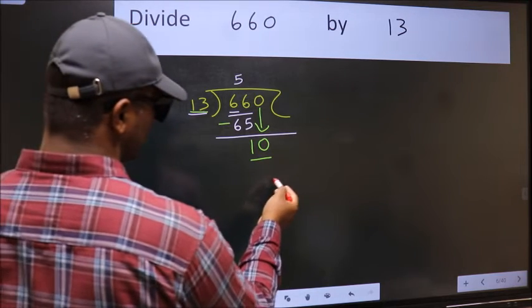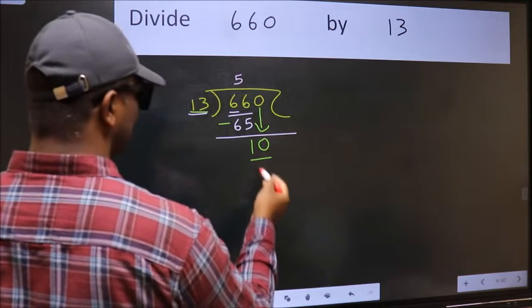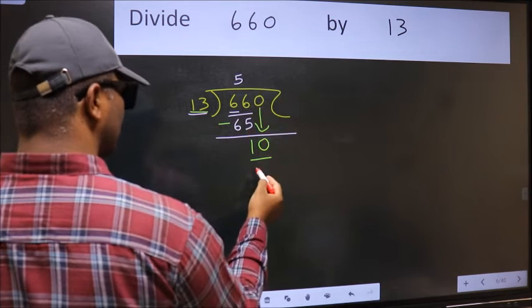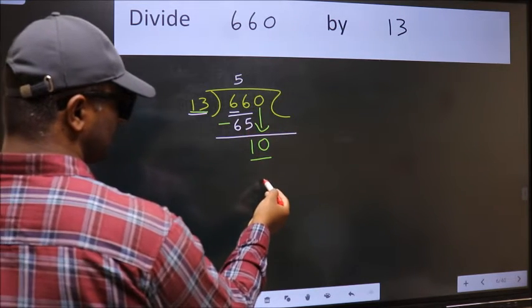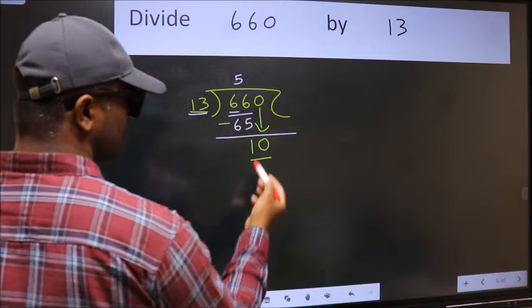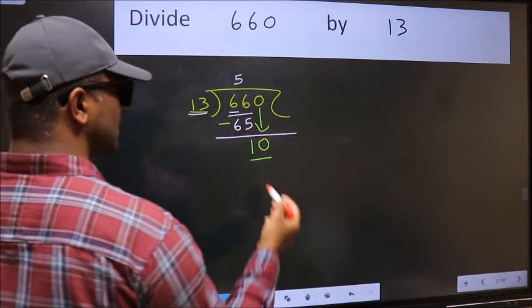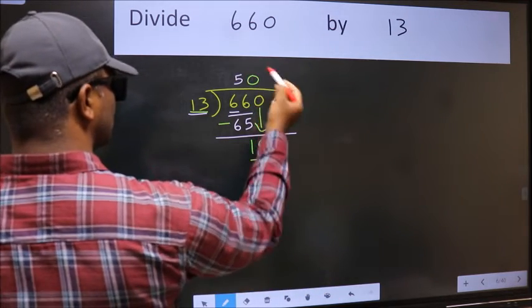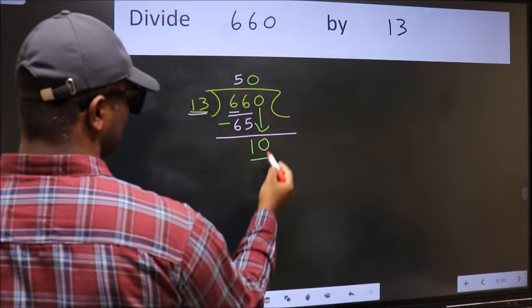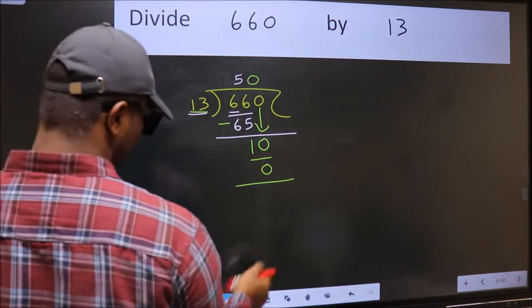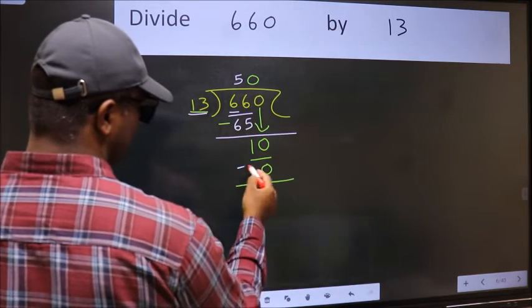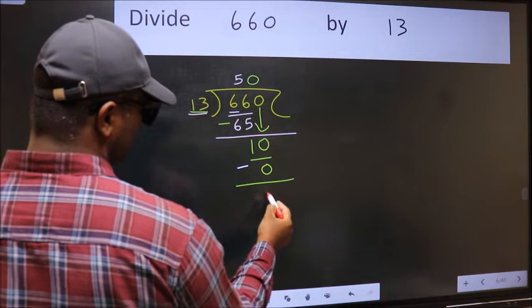If I take 1, we will get 13. But 13 is larger than 10. So what we should do is, we should take 0. So 13 into 0, 0. Now we should subtract. 10 minus 0, 10.